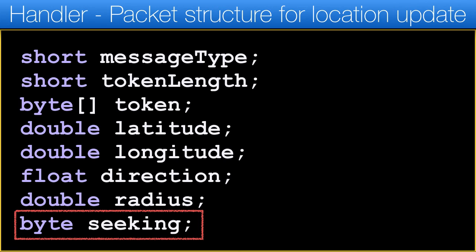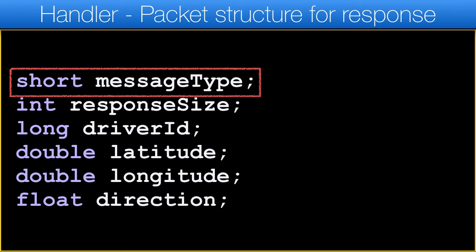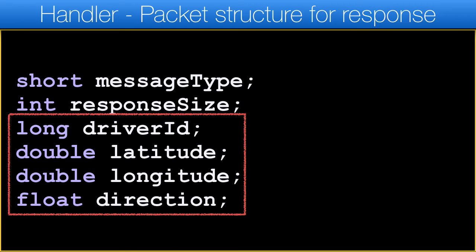Once this packet is processed, the server returns the cars within the search radius by sending a packet back. In this case we don't need the token, as this is a message from the server. The response type can be 2 for a driver position update and 3 for an available driver position update. The entry indicates the number of drivers in the returned data, and the rest of the lines repeat for every driver — response size times — and include the position data for every driver.